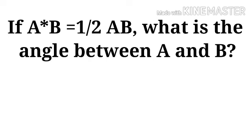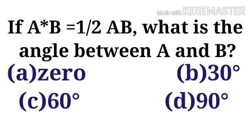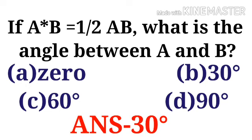If A cross B equals 1/2 AB, what is the angle between A and B? The options are: Option A, 0; Option B, 30 degrees; Option C, 60 degrees; Option D, 90 degrees. The correct option is Option B, 30 degrees.